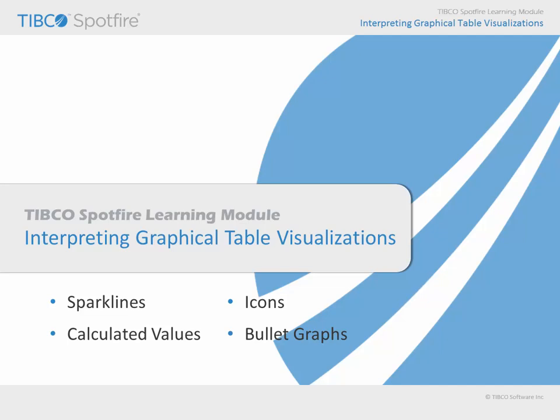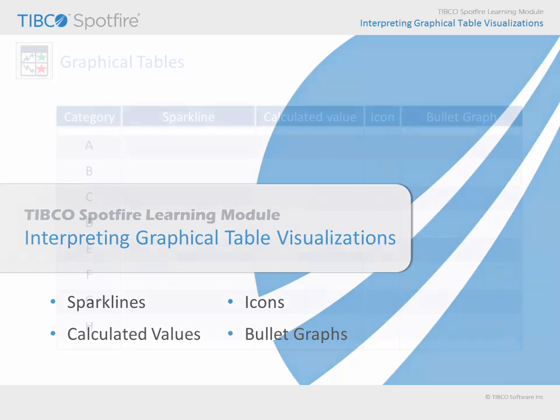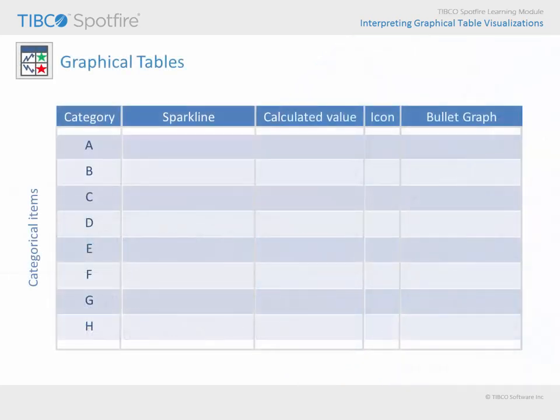The graphical table visualization allows you to organize these informational elements for categorical items which are organized as rows in a table. For example, the graphical table can be used to display information for each of these stores, identified with a store number value.